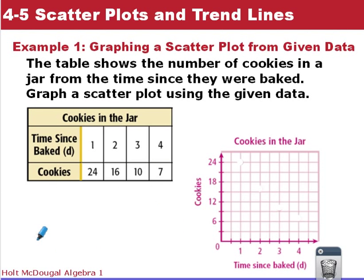Here's our first example. The table shows the number of cookies in a jar from the time since they were baked. We want to graph a scatter plot using the given data. On our graph, time baked is our control variable, and the number of cookies we get is going to be our dependent variable.